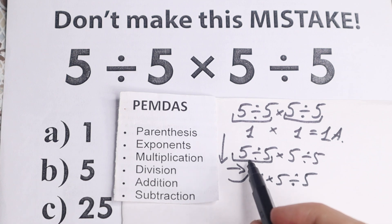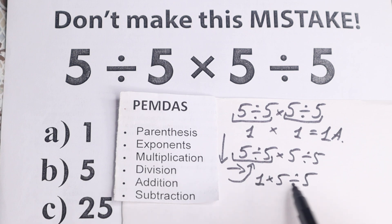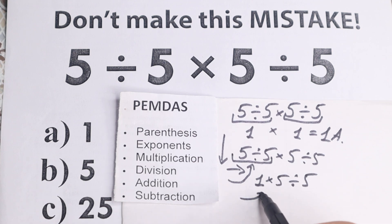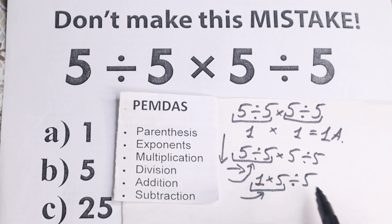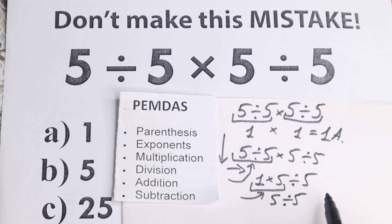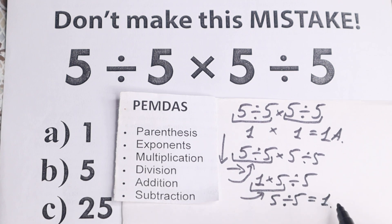Now we have the new expression. We need to scan again what is the first sign from left to right, because we still have the multiplication and division group. From left to right, the first sign is multiplication. So we multiply 1 times 5, which equals 5, and then we still have division by 5. So 5 divided by 5 equals 1.